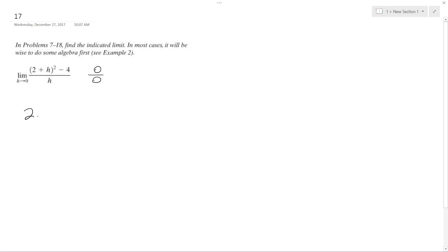but what I do if I multiply this out, I get 4 plus 2h plus 2h plus h squared minus 4 all over h. So I'm going to combine like terms,